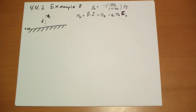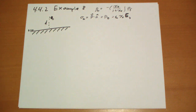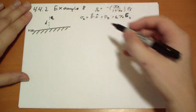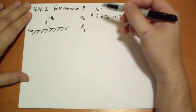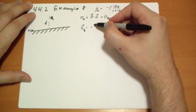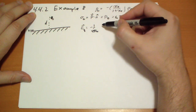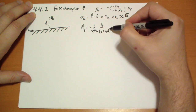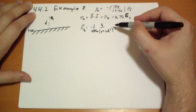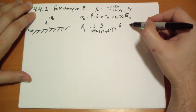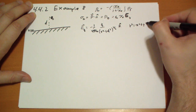The electric field is going to have one part due to the charge above the plane and another part due to the surface charge. The electric field due to the charge above is written as: negative 1 over 4π epsilon-naught, times Q divided by (R² + D²)^(3/2), pointing in the k-hat direction, where R² = x² + y².